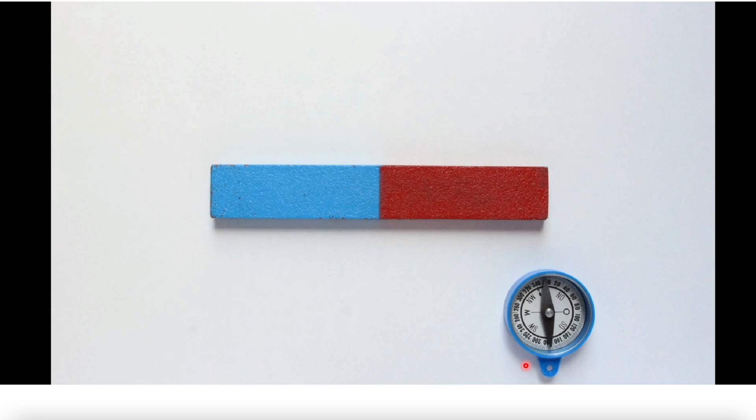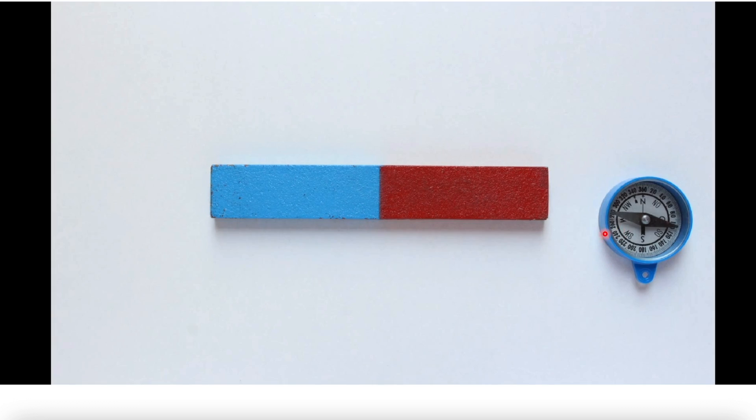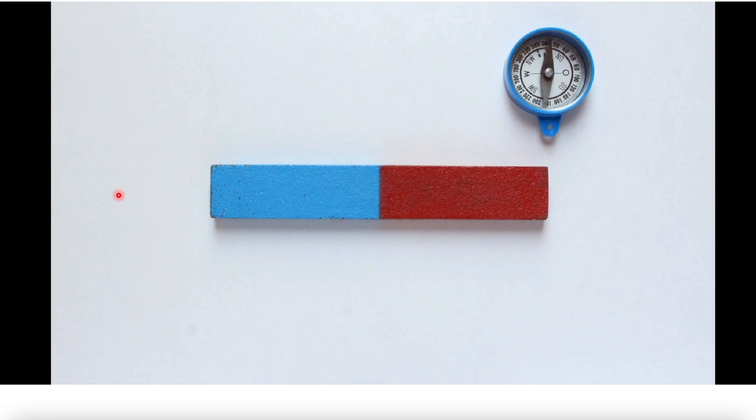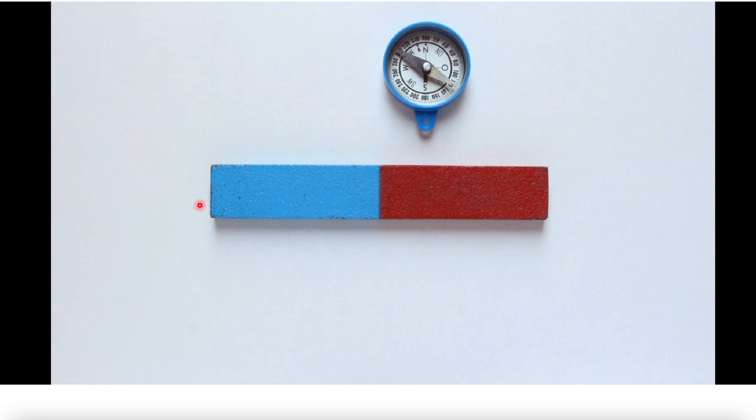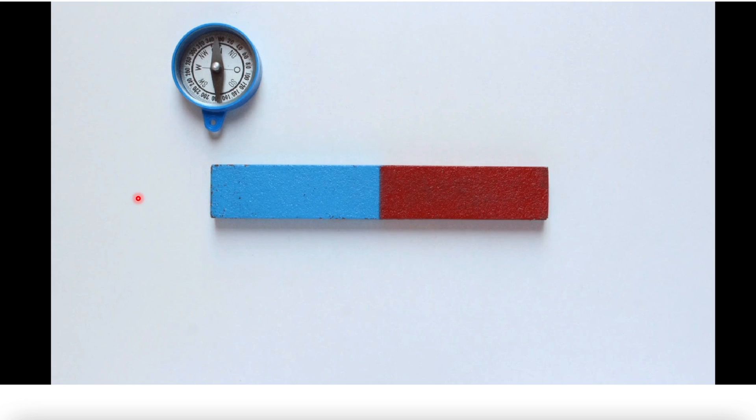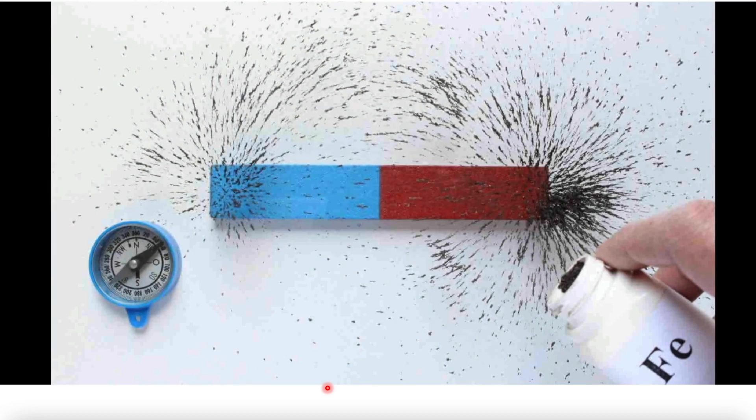Make a new mark where the tip of the arrow is pointing this time. Keep doing this until you reach the other end of the magnet. Connect the dots. You have just drawn one magnetic field line.